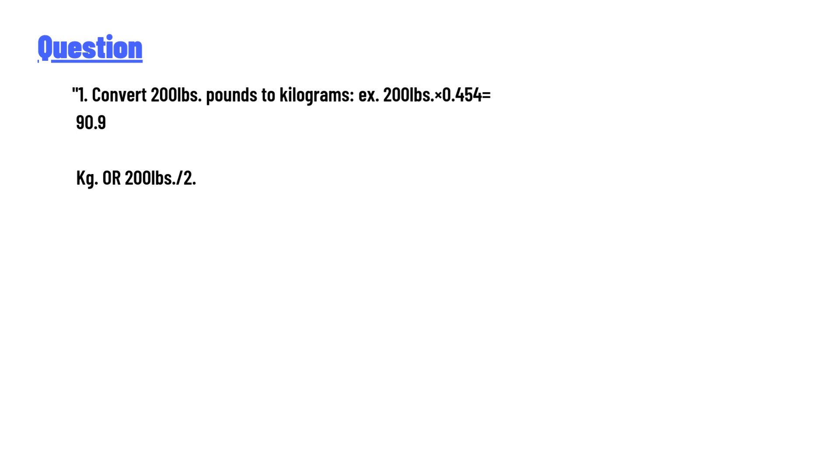Convert 200 lbs (pounds) to kilograms. Example: 200 lbs × 0.454 = 90.9 kg, OR 200 lbs ÷ 2.